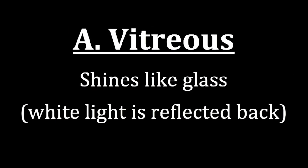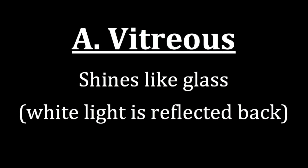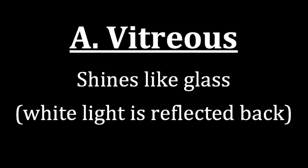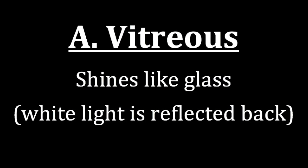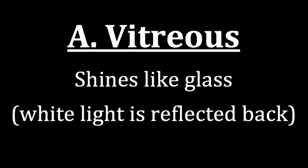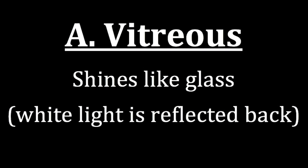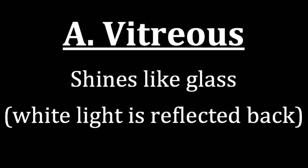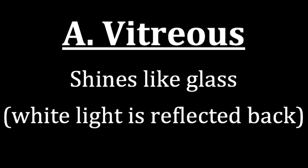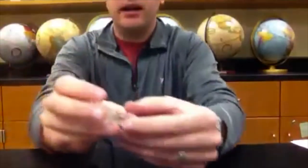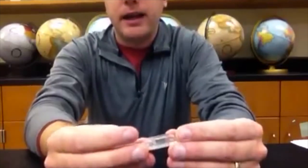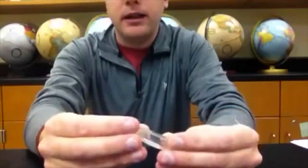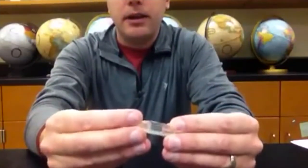Vitreous means it shines like glass. When we look at minerals that have a vitreous luster, we're going to see white light reflecting off of the mineral back to our eyes. White light is coming from the ceiling, and when we look at the mineral and move it around, you'll see flashes of white light coming off it.